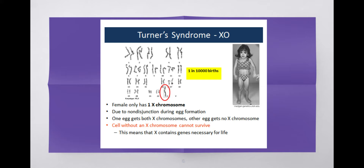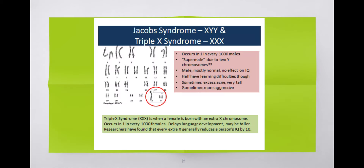Turner syndrome is an example of monosomy. Where we would normally have a sex cell with two chromosomes, there is only one - an XO. This person is female because they only have one X chromosome. This is due to non-disjunction during egg formation: one egg gets both X chromosomes and the other gets none. A cell without an X chromosome can't survive, so we've discovered that an X chromosome is actually necessary for life. A person with Turner syndrome tends to be smaller in stature and look more childlike because they're missing that other sex chromosome.